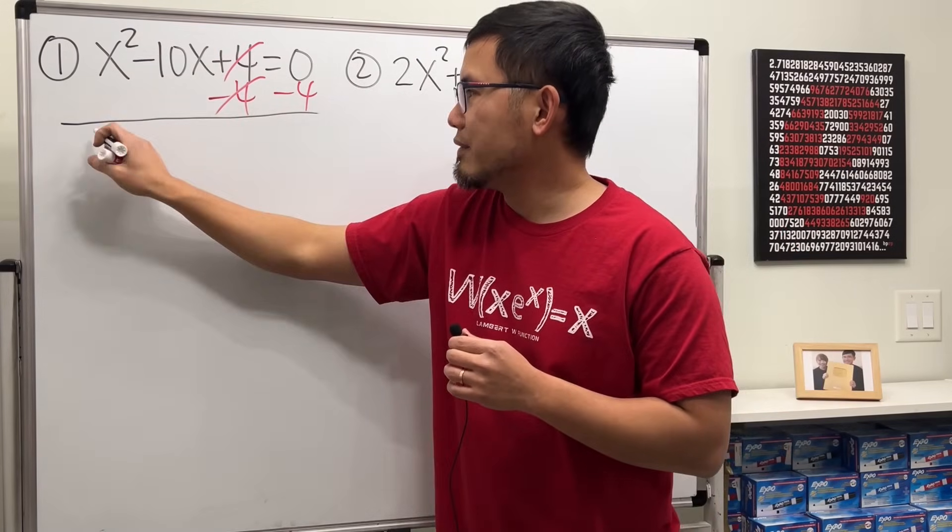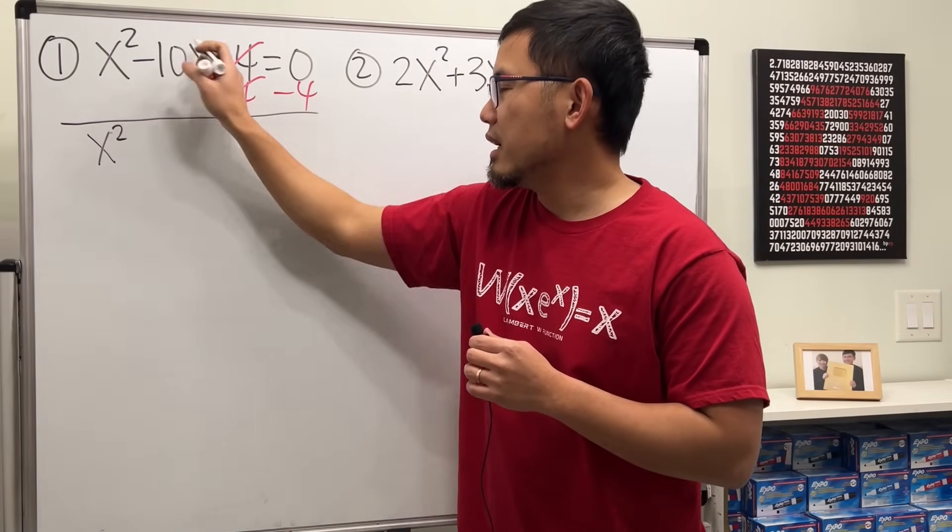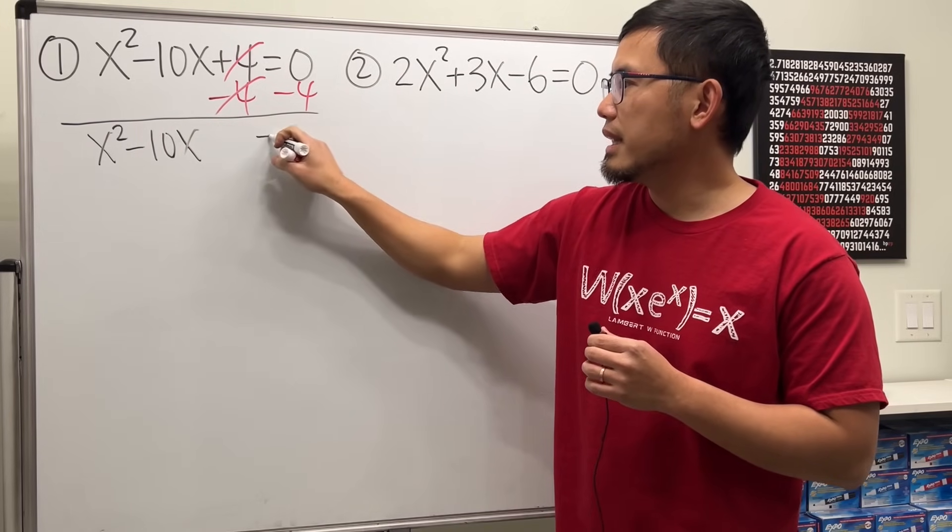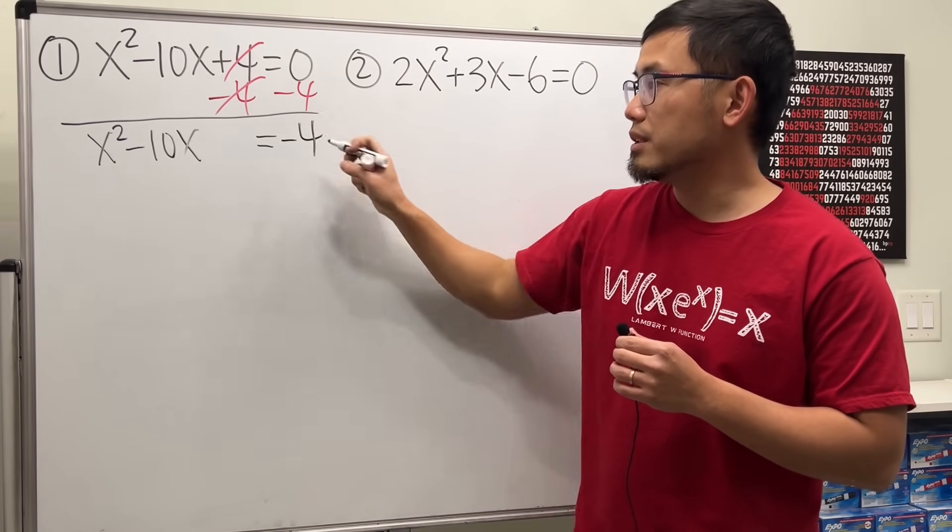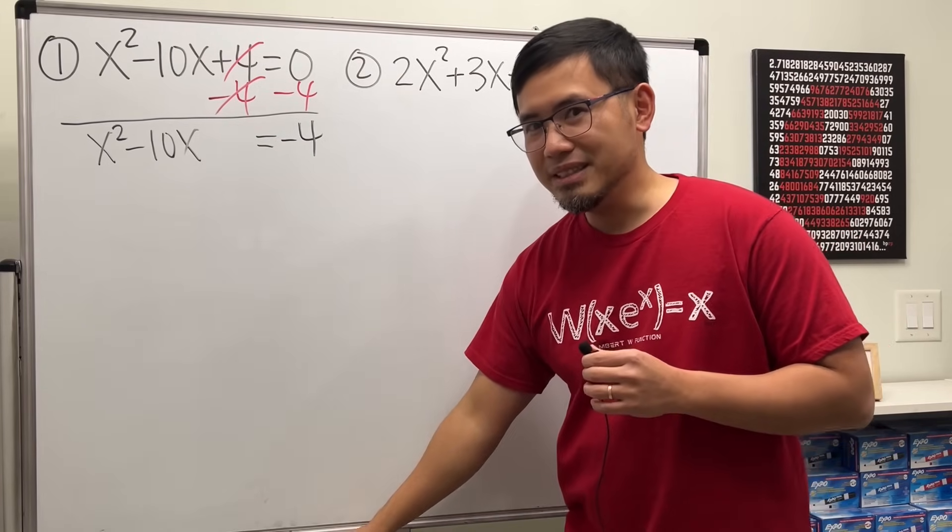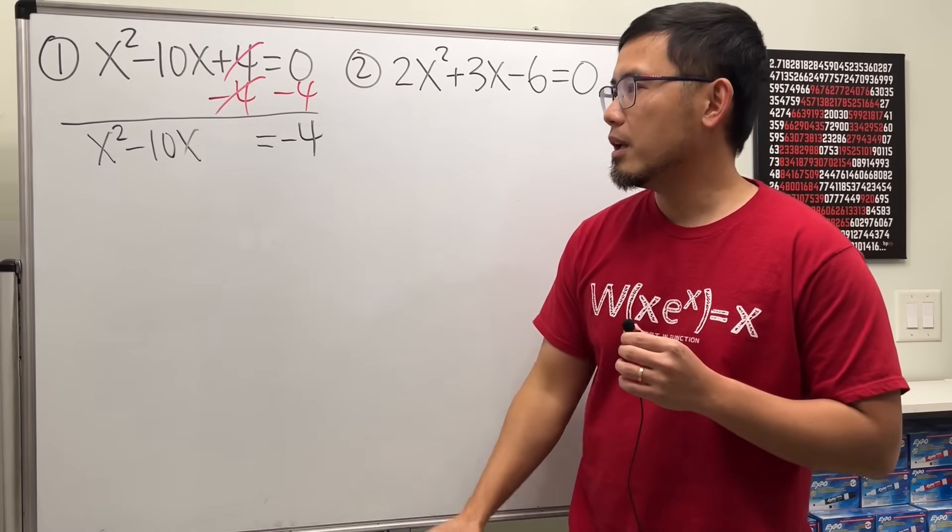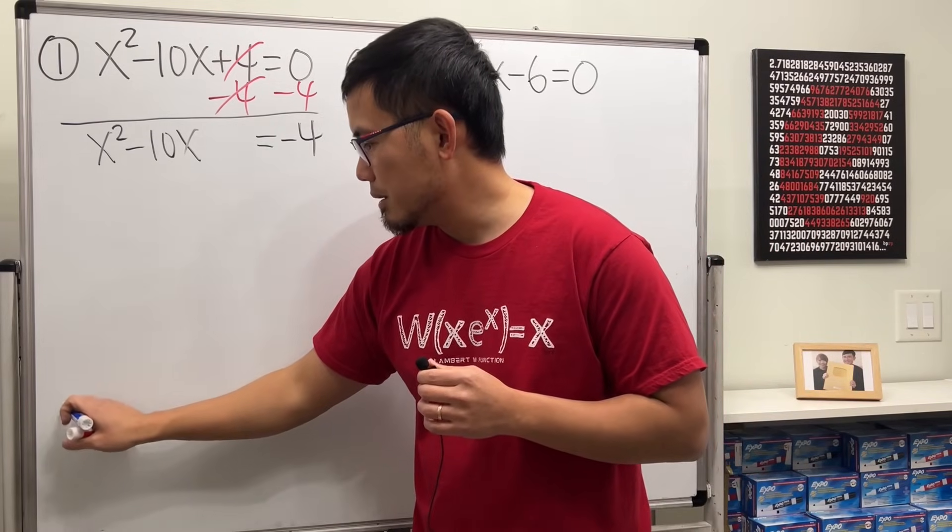And again, we just want to have the 1x squared, and then minus 10x, and leave a space here. And that's going to be 0 minus 4, which is negative 4. Then, remember, step 2, we have to get the magic number. And the formula for that is, let me write this down right here.